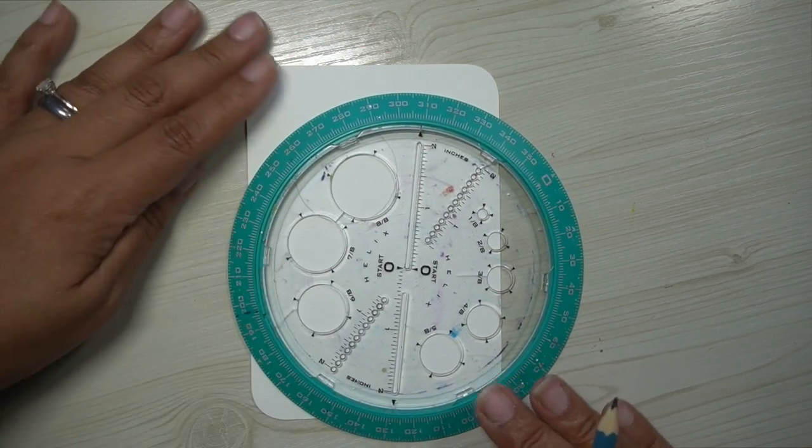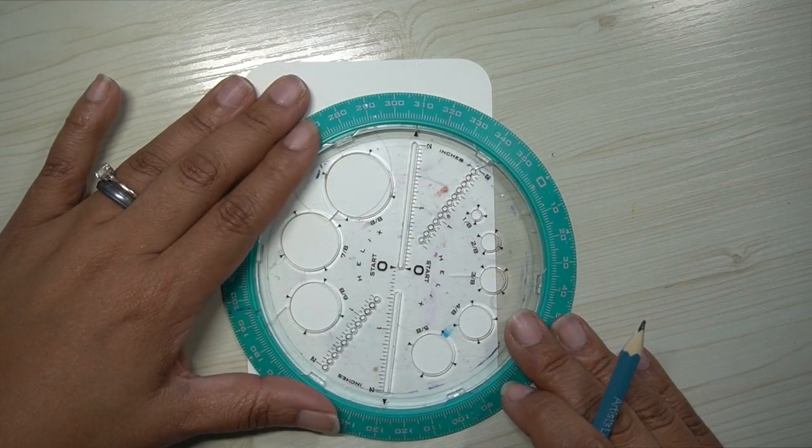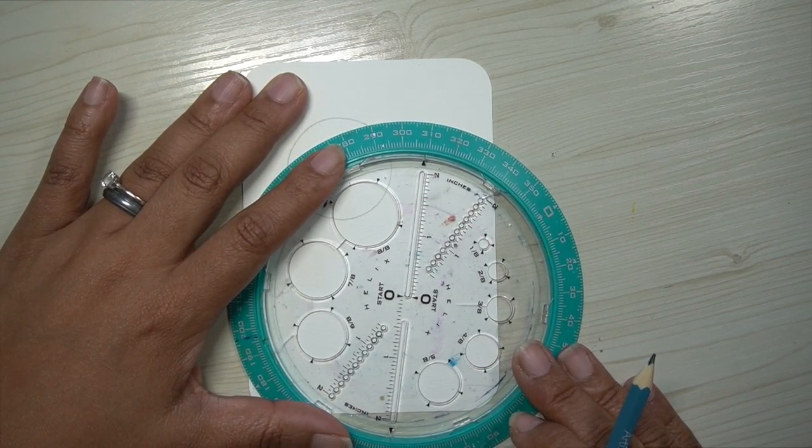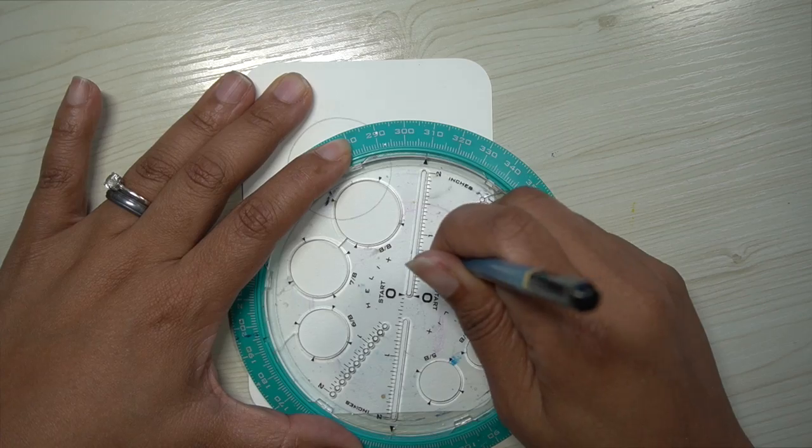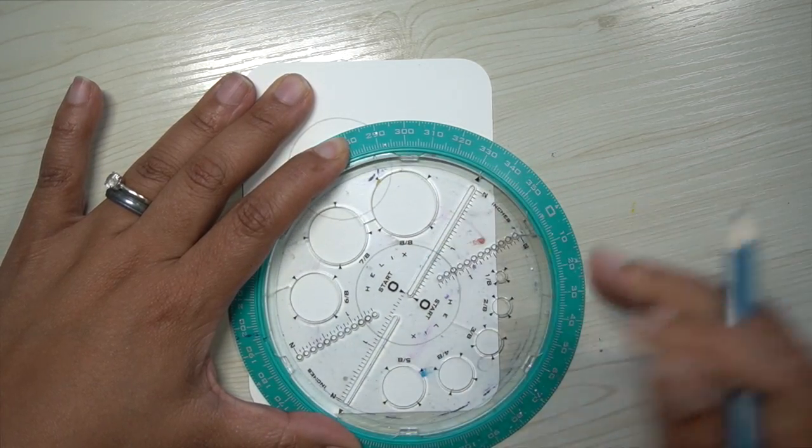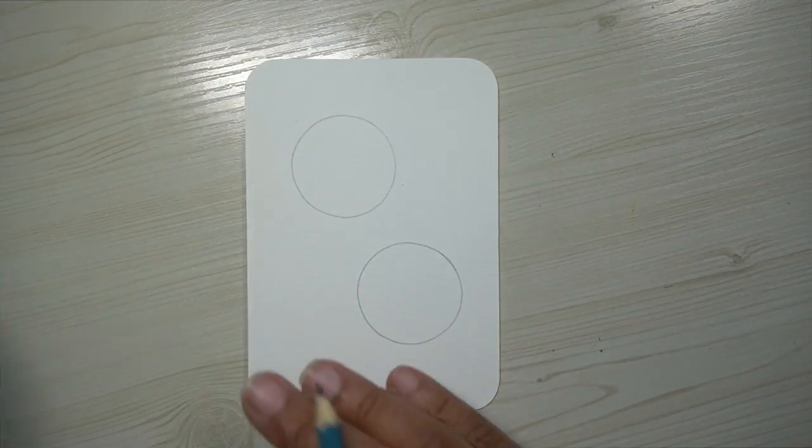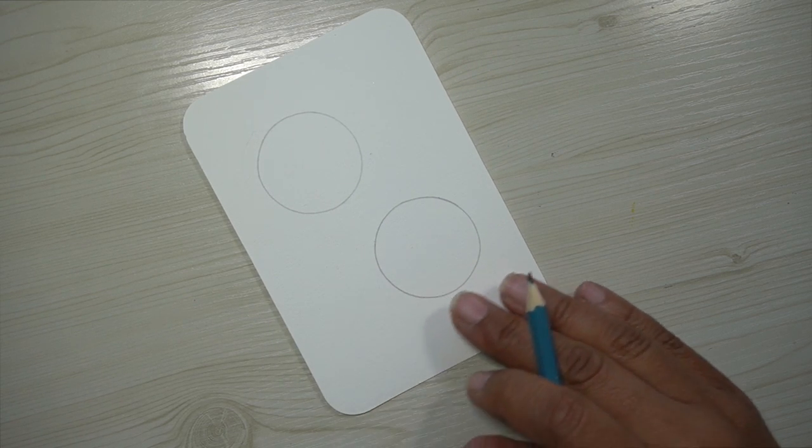So we're going to start with making two circles. I use a circle maker because my ability to hand draw circles is severely limited. So we are going to use this circle maker and make two bells or two circles.